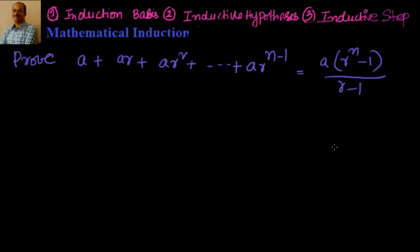We have to prove that a plus ar plus ar squared plus ar cubed, up to n terms, that is ar to the power of n minus 1, and the sum of this is equal to a into r to the power of n minus 1, by r minus 1.